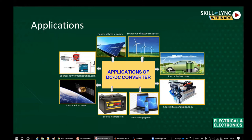DC-to-DC converters are also used in electric vehicles. The battery supplies the electric motor; to operate the motor at different speeds, to accelerate or decelerate during braking, we need a variable DC voltage. To achieve that, a DC-to-DC converter is used along with the battery for supplying the motor.